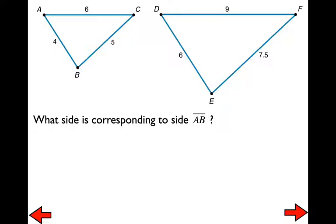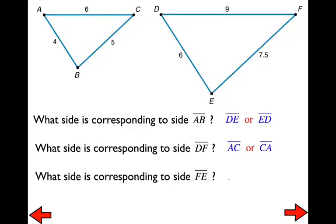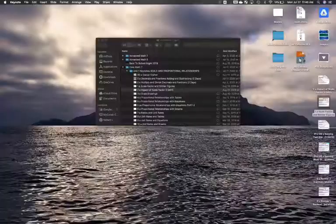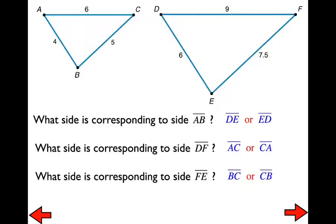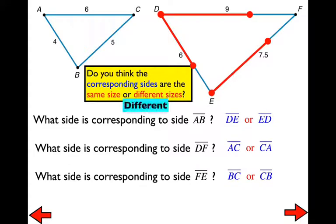What side corresponds to AB? That would be DE (or ED). What side corresponds to DF? That would be AC (or CA). What side corresponds to FE? That would be BC (or CB). Fill those in in your notes. Now, are the corresponding sides the same size or different? AB is not the same size as DE — they are different sizes. Same with AC and DF, and BC and EF.